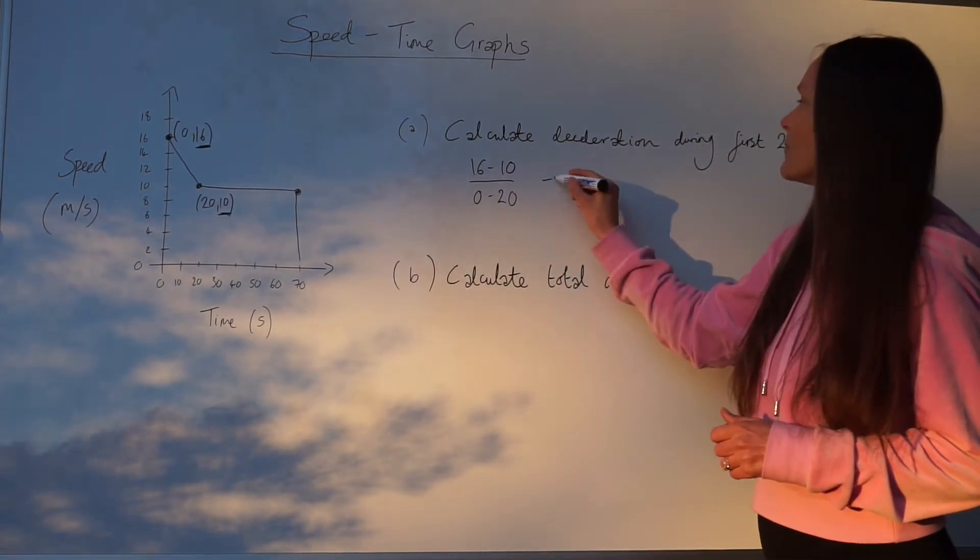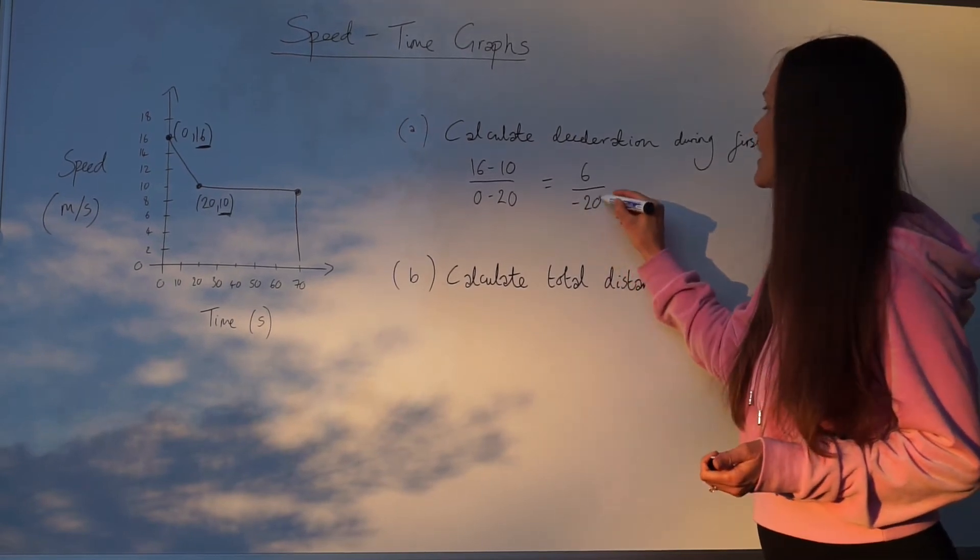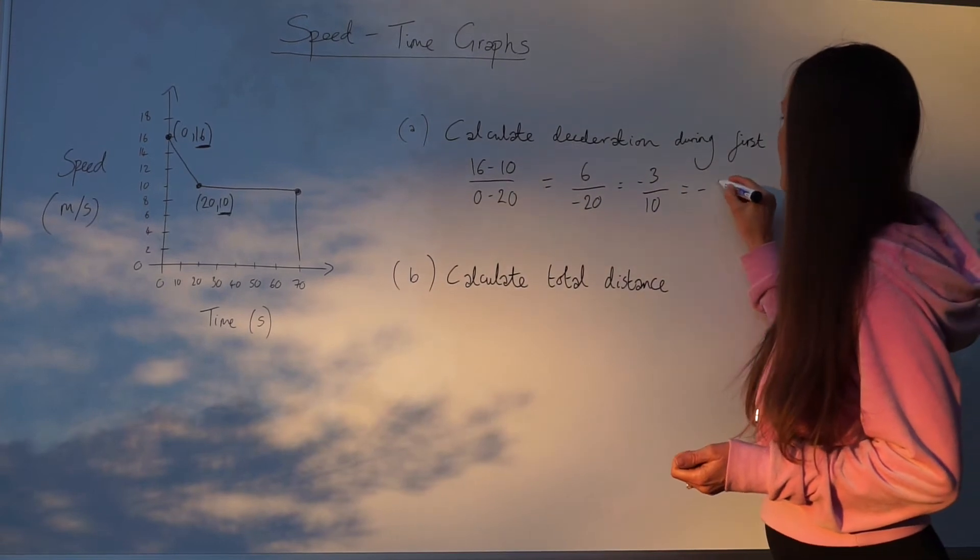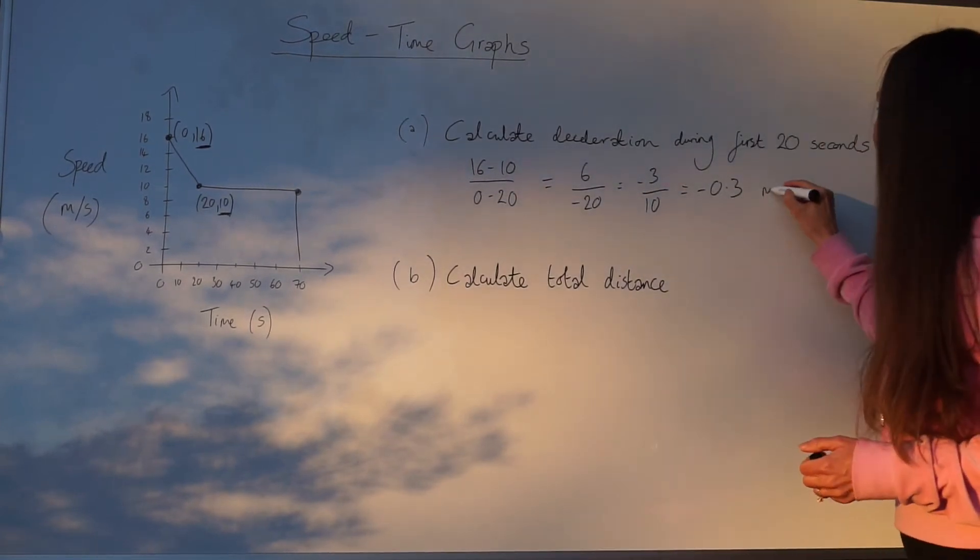Now let's work that out. 16 take away 10 is 6. 0 take away 20 is just negative 20. And that simplifies to negative 3 over 10, or if you want to write it as a decimal, negative 0.3.